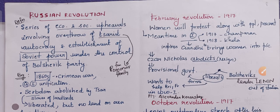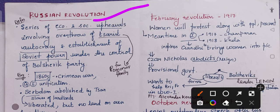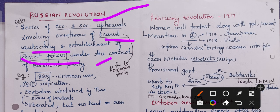Hey guys, let us continue with our world history series. Today we will cover the Russian Revolution topic. The Russian Revolution is defined as a series of economic and social upheavals involving the overthrow of Tsarist autocracy and establishment of Soviet power under the control of the Bolshevik party.